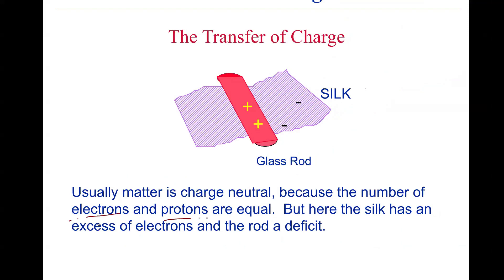If the number of protons and electrons are the same, the object has no net positive or negative charge. However, when the silk has an excess of electrons and the glass rod has a deficit, electrons will start flowing or transferring from the silk to the glass rod. Since the silk has excess electrons and the glass rod has deficient electrons, electrons flow from the silk to the glass rod, meaning the glass rod will become charged.